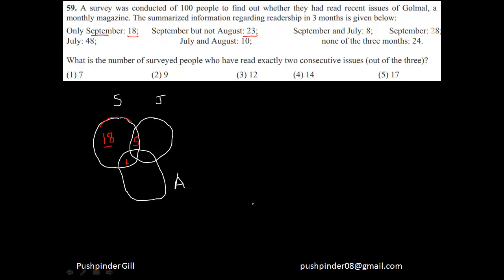Then it says September and July is equal to eight. September and July is this whole overlapping area. If this whole area is equal to eight, that means this portion is equal to three. And September total is equal to 28. This whole September circle is equal to 28, meaning the sum of all the areas of September would be 28. That means if I add all of them they should give me 28, so this must be equal to two. So I've filled in the whole September region.